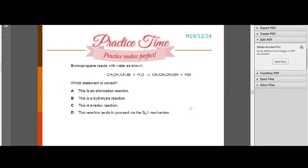Let's try this. This is not an elimination. Why? Because in elimination reactions, double bonds are produced. But you can see that this just substitutes Br with OH, right? So this is not an elimination reaction. This is hydrolysis, correct, since water breaks the C-Br bond. This is not redox. And this is not SN1 because this is primary halogenoalkane. It should be SN2.